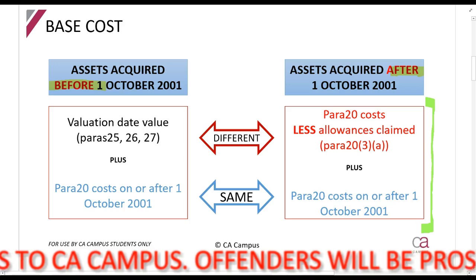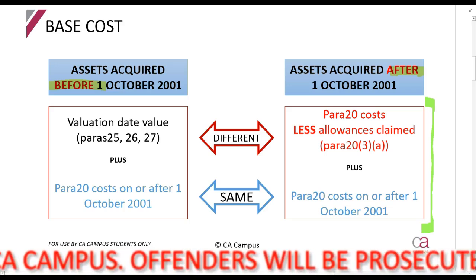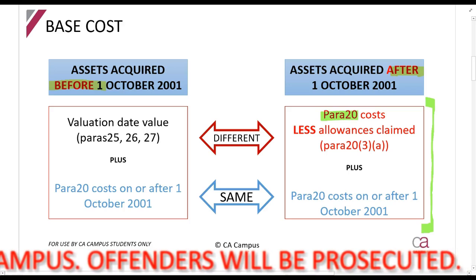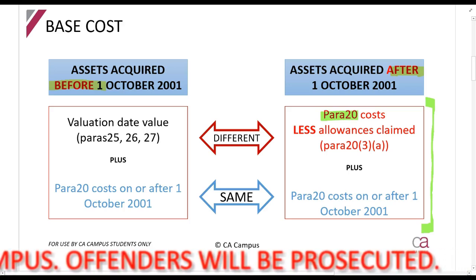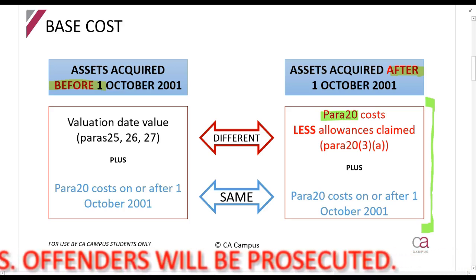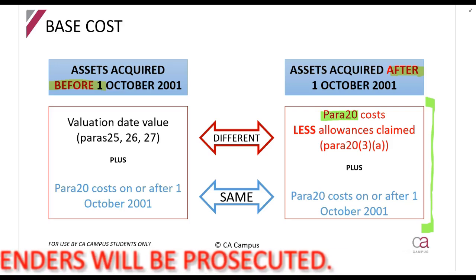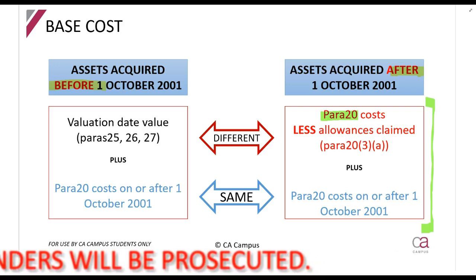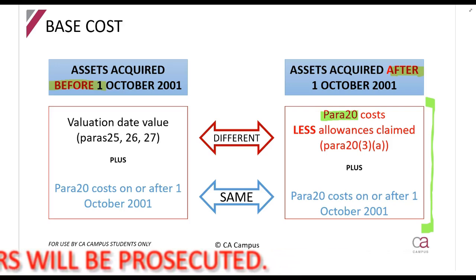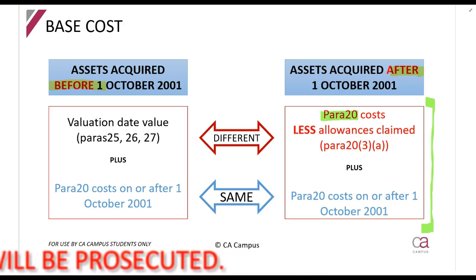1 October 2001 is a lot of years ago now, but how do we calculate it? It is all of the cost allowed by paragraph 20. So whenever you see them refer to paragraph 20, they are talking about the base cost calculation — paragraph 20 costs less any allowances that you've already claimed.